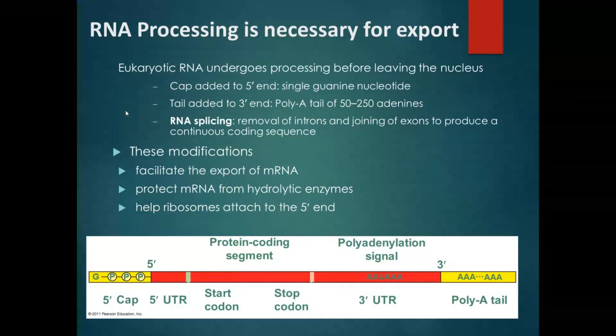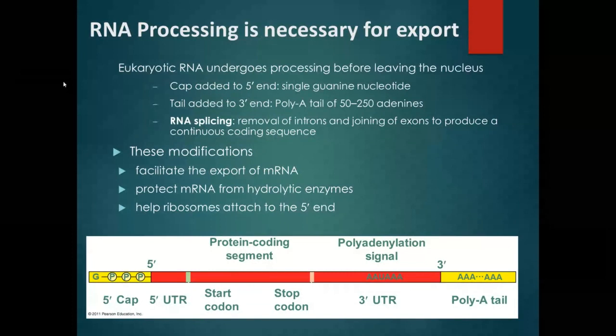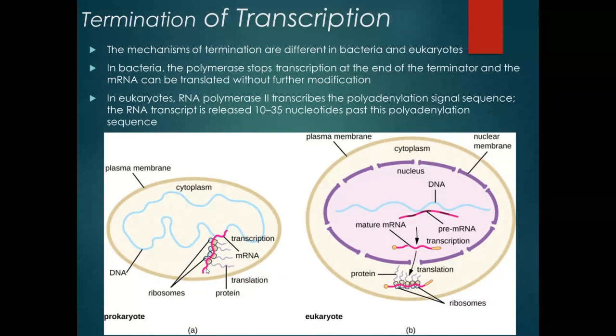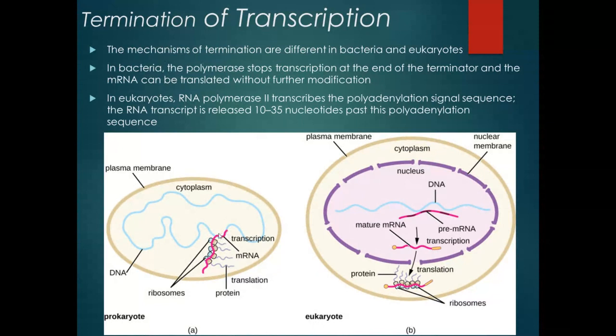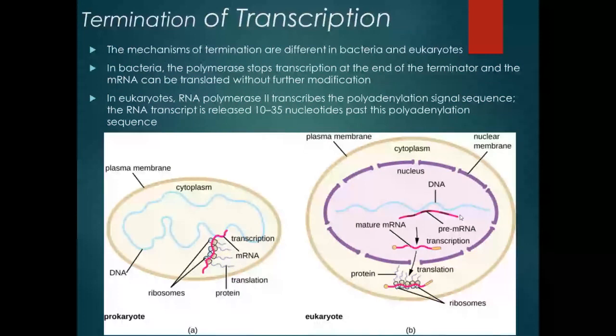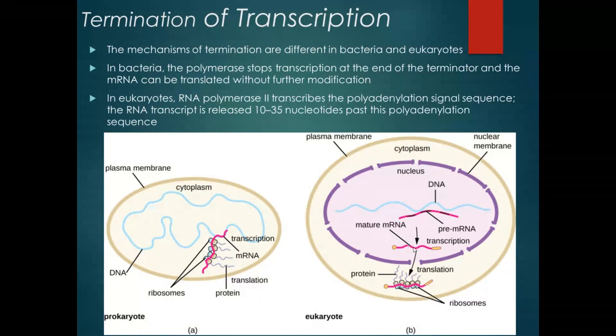Now that we've made the RNA — if we're in a prokaryote, the RNA that is made can immediately be translated. There's no nucleus, no separation of where the DNA is and where the ribosomes are. So it can happen simultaneously. You can see in this picture that the pink RNA is still being made on the DNA, and ribosomes are already jumping on and making proteins. In a eukaryote, it can't happen simultaneously.